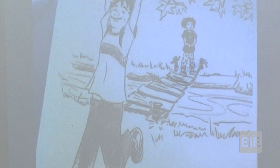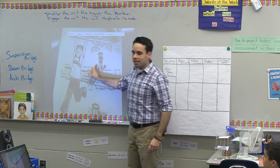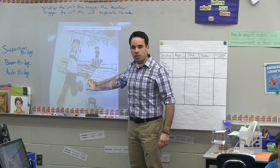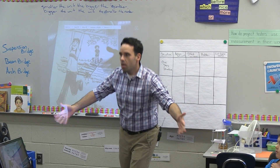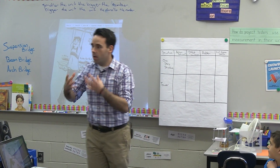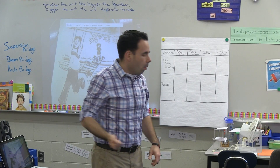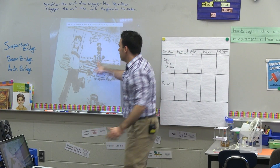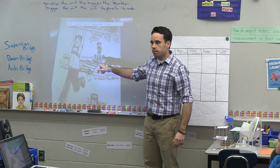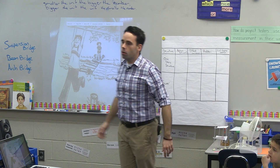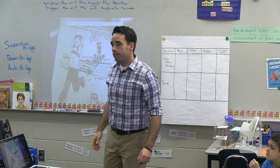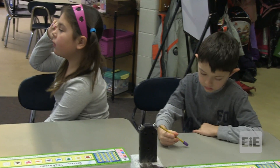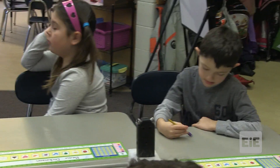It is the bridge — this is the structure. Now what happened to the structure in the story? It broke, it collapsed. What caused this structure to collapse? The weight on it. His sister's weight. That is something we call force.